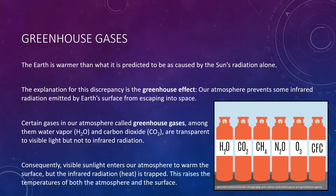The Earth happens to be warmer than what is predicted to be caused by the sun's radiation alone. The explanation for this discrepancy is called the greenhouse effect. Our atmosphere prevents some of the infrared radiation emitted by Earth's surface from escaping into space. Certain gases in our atmosphere, known as greenhouse gases — among them water vapor and carbon dioxide — are transparent to visible light but not to infrared radiation. As a consequence, the infrared radiation coming from the heated surface is trapped by the atmosphere, raising the temperatures of both the atmosphere and the surface.